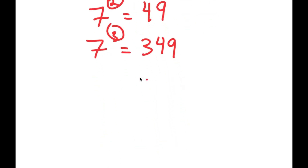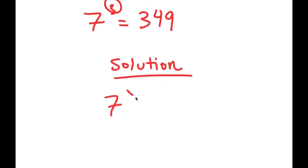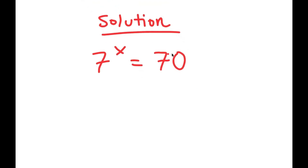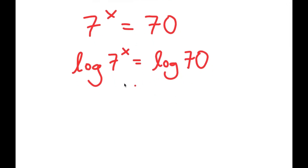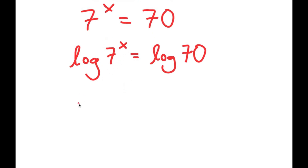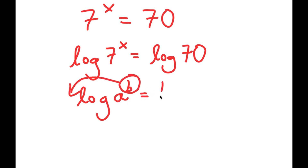Now to actually solve for x, my equation is 7 to the power of x is equal to 70. What I'm going to do first — and what I recommend doing for any exponential equation such as this — is taking the log on both sides. The reason you should do this is because now you can use the property: log of a to the power of b. You can move this b to the front, so you get b times log a.